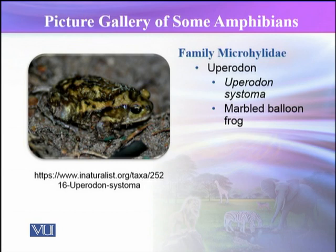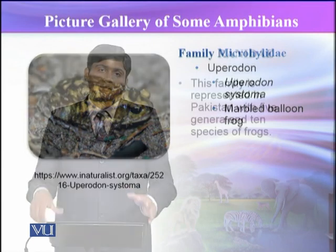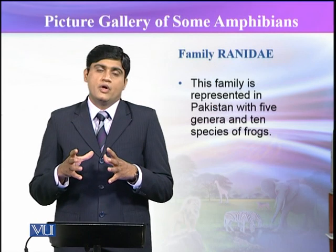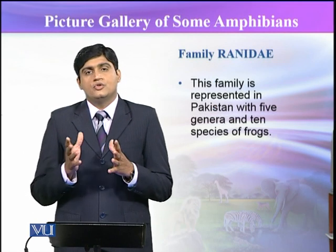These glands secrete substances that make the animal slippery, so that when someone tries to catch or capture it, the animal slips through the hands and escapes predators. The species and genus included here is called Uperodon systoma.